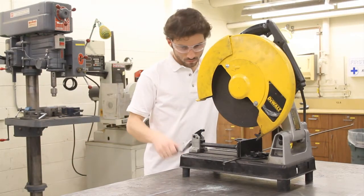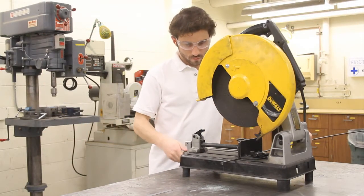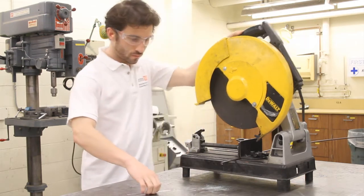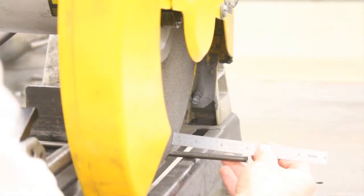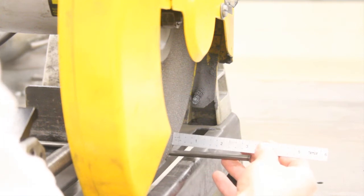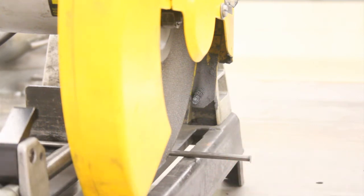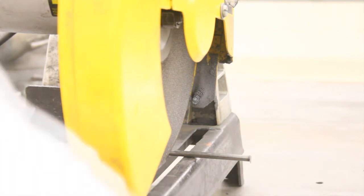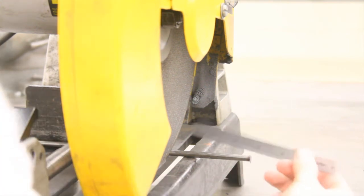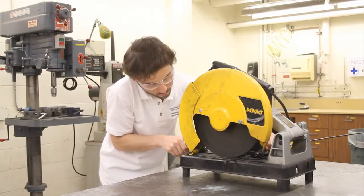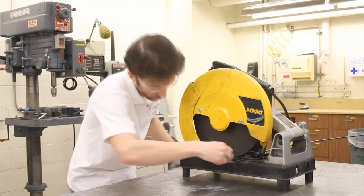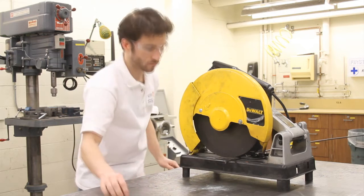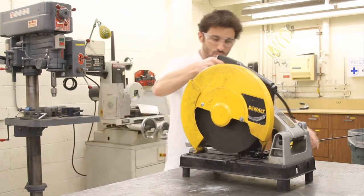Clamp the quarter inch steel round stock into the cutoff saw, measuring 3 inches from the blade. Press the trigger, and then bring the blade down to cut the part.